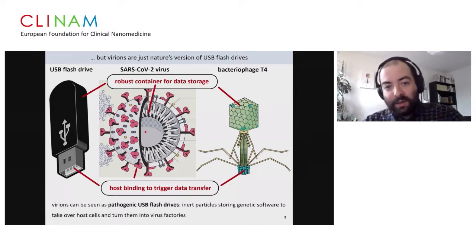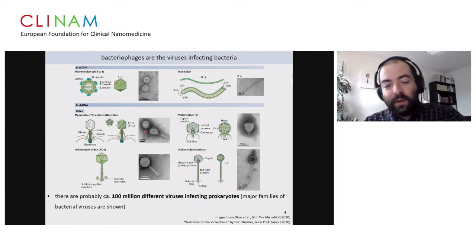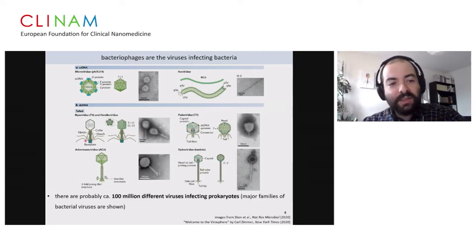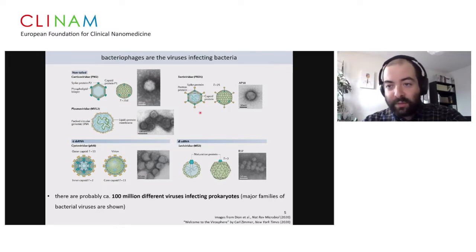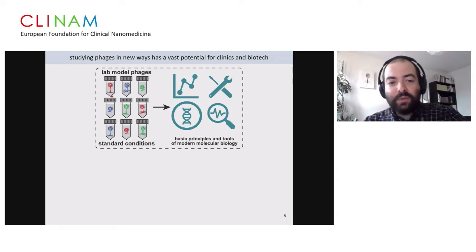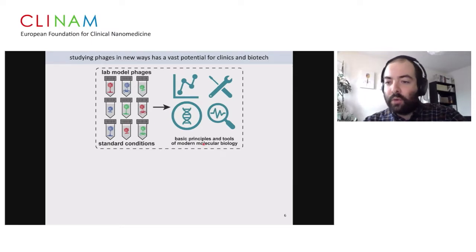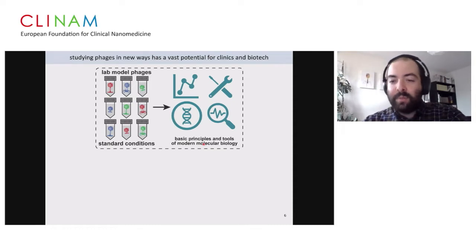Bacteriophages are totally harmless to humans, but very efficient and effective at infecting and killing bacteria. There's a huge diversity of phages out there — hundreds of millions of different types. A very small number has been studied since the middle of the last century as lab models, used to unravel basic principles of life and providing tools for molecular biology: restriction enzymes, CRISPR-Cas9, Cre-loxP for making mutants in mice, and T7 RNA polymerase for protein expression. These all come from phages or from host defenses against phages.